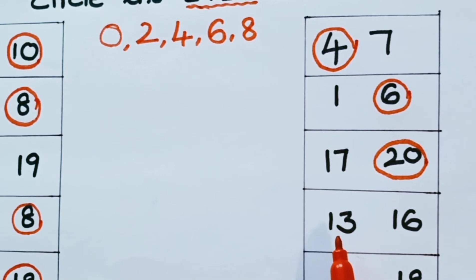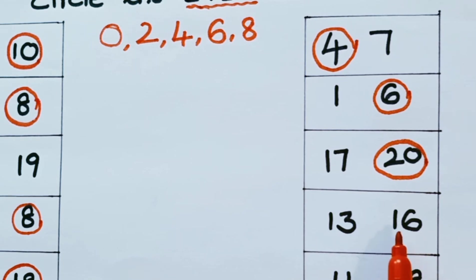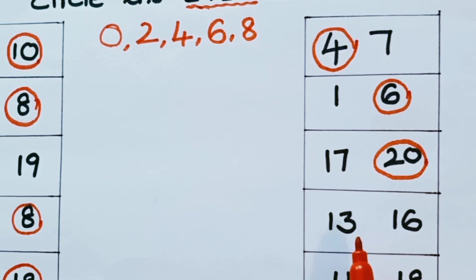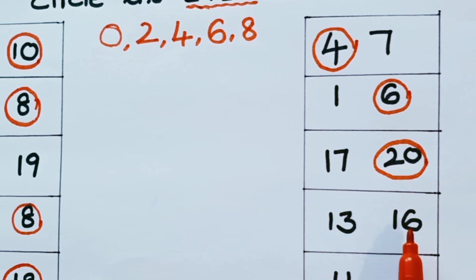What are the two numbers in the next row? 13 and 16. What is the even number? It is 16.